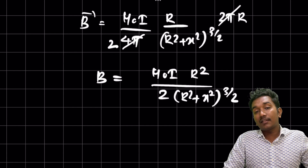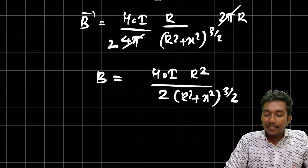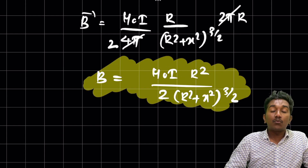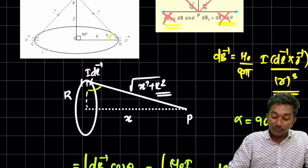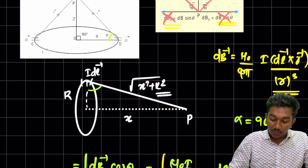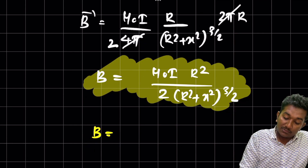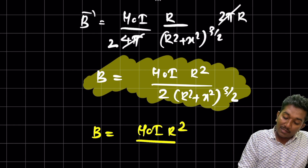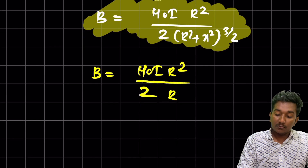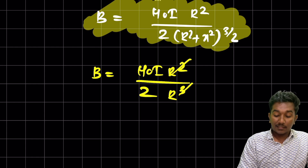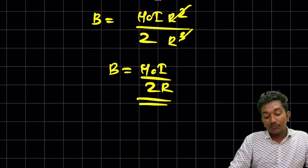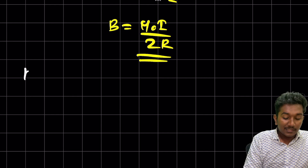The final answer is: B = μ₀iR² / [2(R² + x²)^(3/2)]. That is the final result. Now, to find the magnetic field at the center of the coil, set x = 0. Then (R² + 0²)^(3/2) = R³, and R² / R³ = 1/R. So B at center = μ₀i / 2R.